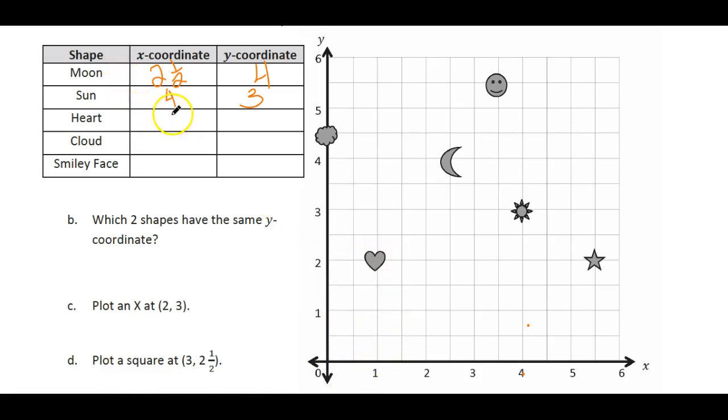And then if you take a look at the cloud, here's our cloud. We don't go over at all, it's at zero, and then when we go up the y-axis here we're at four and a half, four and a half. Here we've got the smiley face. Let's see, the smiley face is halfway between three and four, which puts it at three and a half right there, three and a half over. And then how far up do we go? We go to five and a half, five and a half.